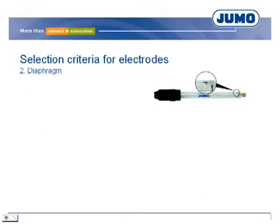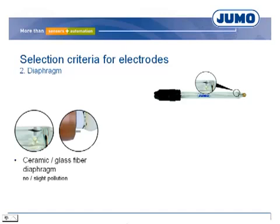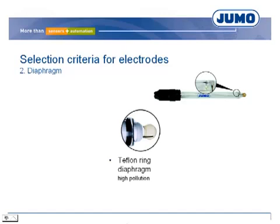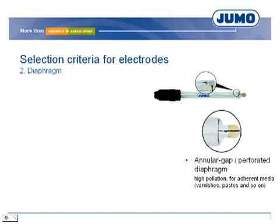Using the right diaphragm for the application is very important. When the medium is not or only slightly polluted, the ceramic or glass fiber diaphragm can be used. For high pollution, such as wastewater applications, the Teflon ring diaphragm enables a larger connection between medium and reference electrolyte, and particles can adhere to the Teflon only rarely — it has a self-cleaning effect. Annular gap or perforated diaphragms are used with a solid electrolyte for media with high pollution or adherent media like varnishes or pastes.